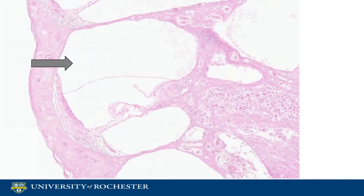The vestibular duct is a perilymph-filled cavity and is part of the inner ear that conducts vibrations to the cochlear duct. This is the vestibular membrane, known as Reissner's membrane. This separates the vestibular duct from the cochlear duct.